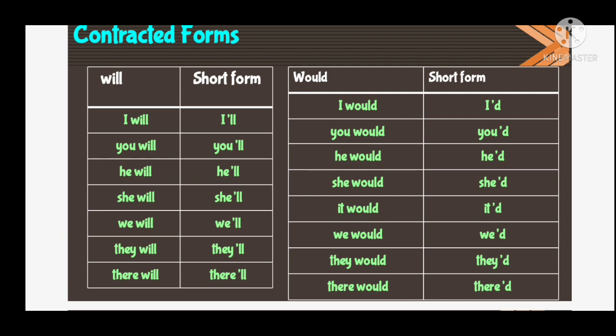The table now uses 'will'. 'I will' — short form is 'I'll', I apostrophe ll. 'You will' — short form is 'you'll'. 'He will' — short form is 'he'll', he apostrophe ll. 'She will' — short form is 'she'll', she apostrophe ll. 'We will' — short form is 'we'll', we apostrophe ll. 'They will' — short form is 'they'll', they apostrophe ll. 'There will' — short form is 'there'll', they apostrophe ll.